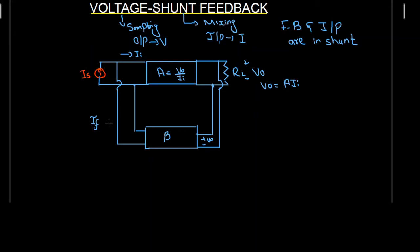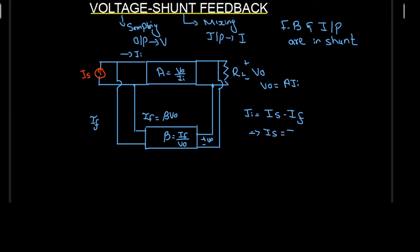We are going to have a feedback current IF, and IF is going to be equal to beta times V0, where beta is the feedback factor. This means that beta is equal to IF divided by V0. Also, we have II equal to IS minus IF, which implies that IS is equal to II plus IF. So these are the other two equations.